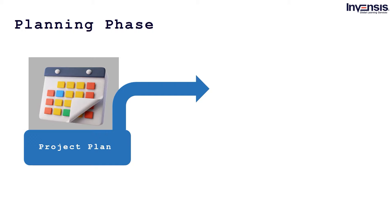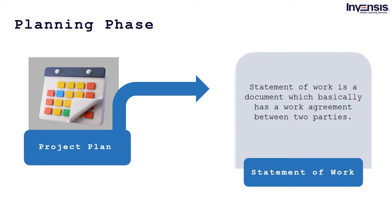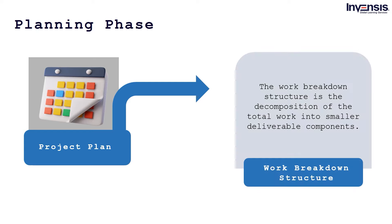A project plan is a set of documents that will guide the entire project. It typically contains various plans including the following. A statement of work is a written work agreement between two parties — it usually contains the scope of work and other information like deliverables. A work breakdown structure breaks down the total work into smaller components or deliverables, organizing the total scope of work and helping in easier project management within the teams.